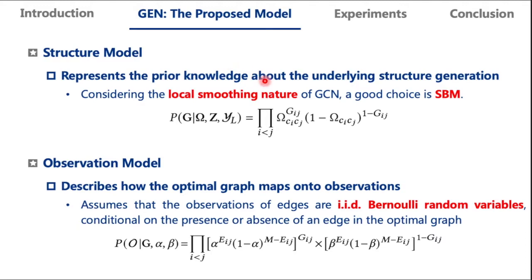Considering the local-smoothing nature of GCN, a good choice for structure model is SBM. SBM assumes that the probability of an edge between nodes depends only on their communities. Here, omega represents the parameters of SBM and indicates the probability of within and between community connections. Ci denotes the label of node Vi. This equation means that generating an edge between node Vi and Vj in optimal graph G depends only on the probability omega CiCj.